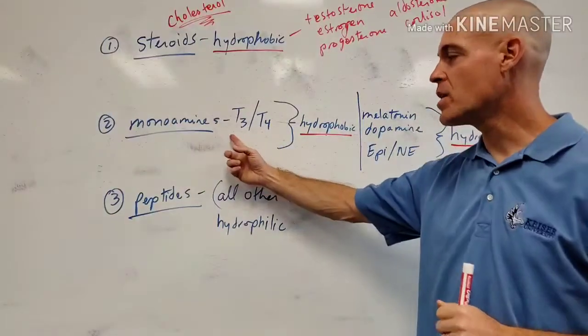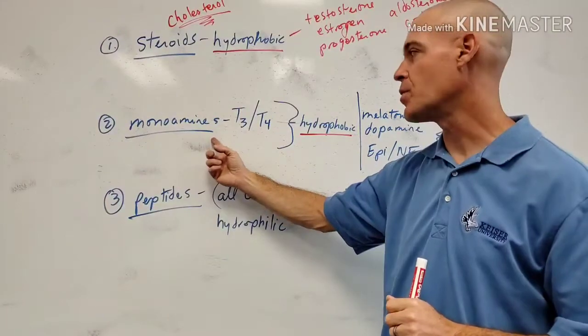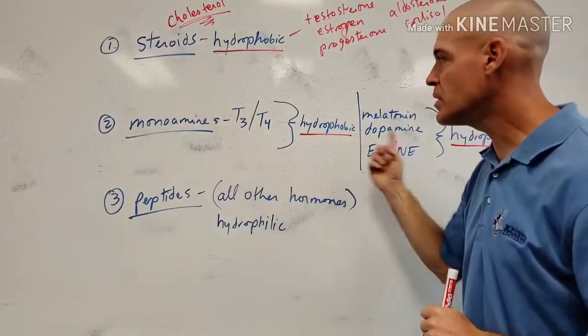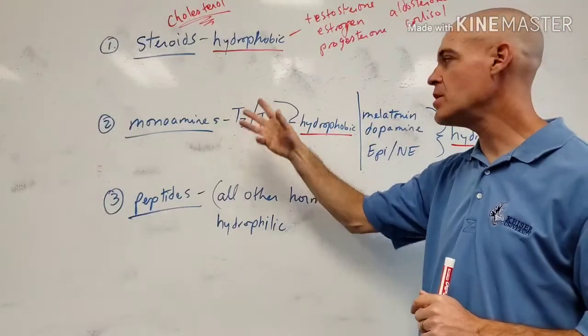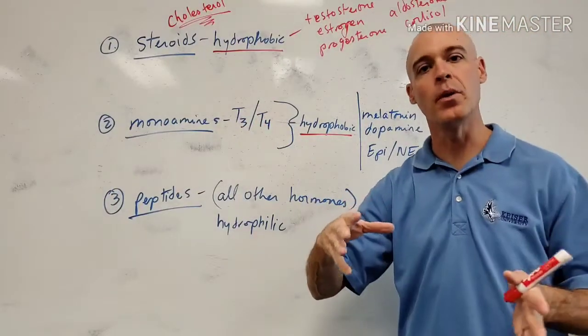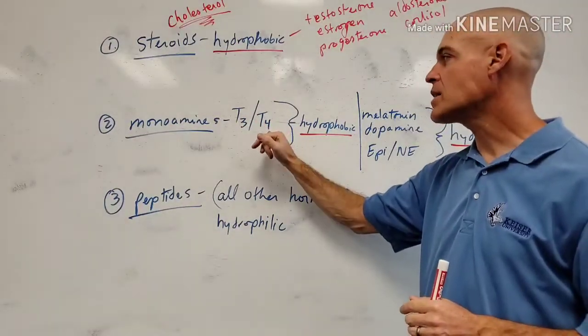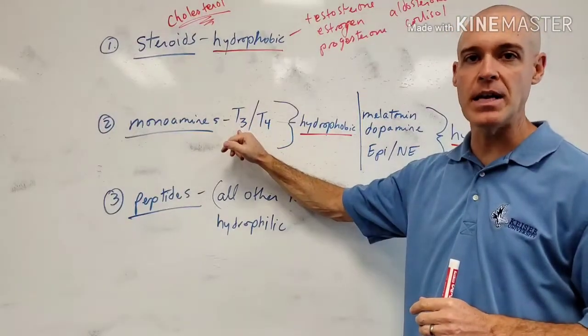So second category is going to be called the monoamines. And these are the examples of the monoamines. We have two, T3 and T4, which many of you guys know. These are the two thyroid hormones of the body, thyroxine and triiodothyronine.